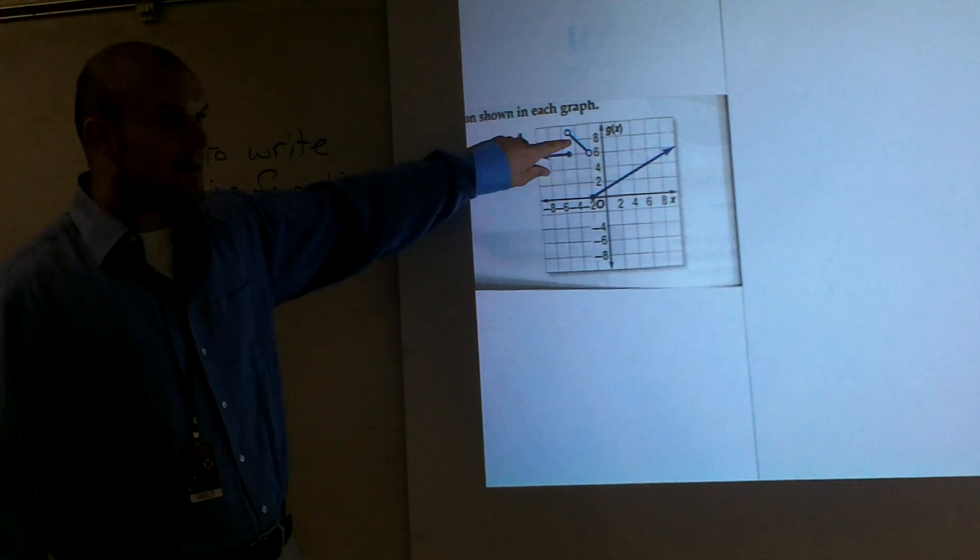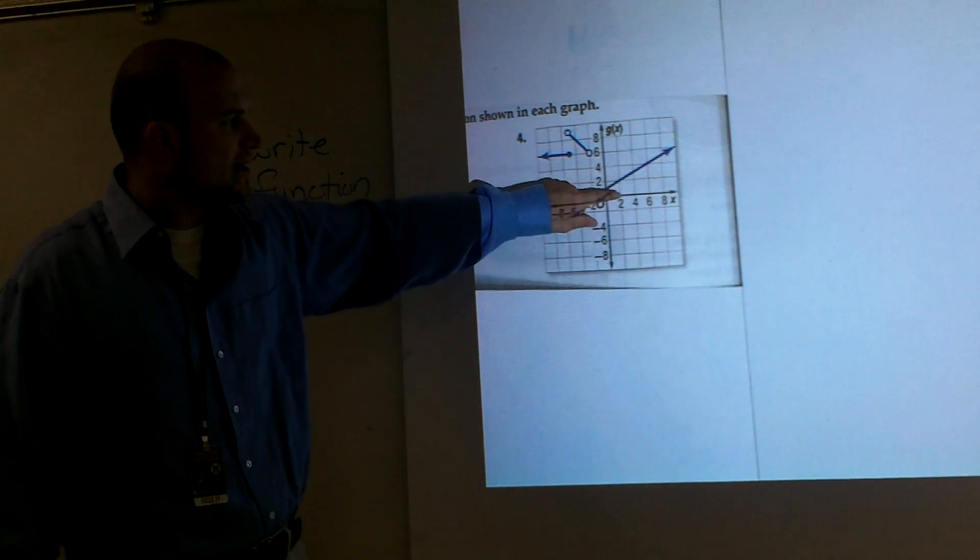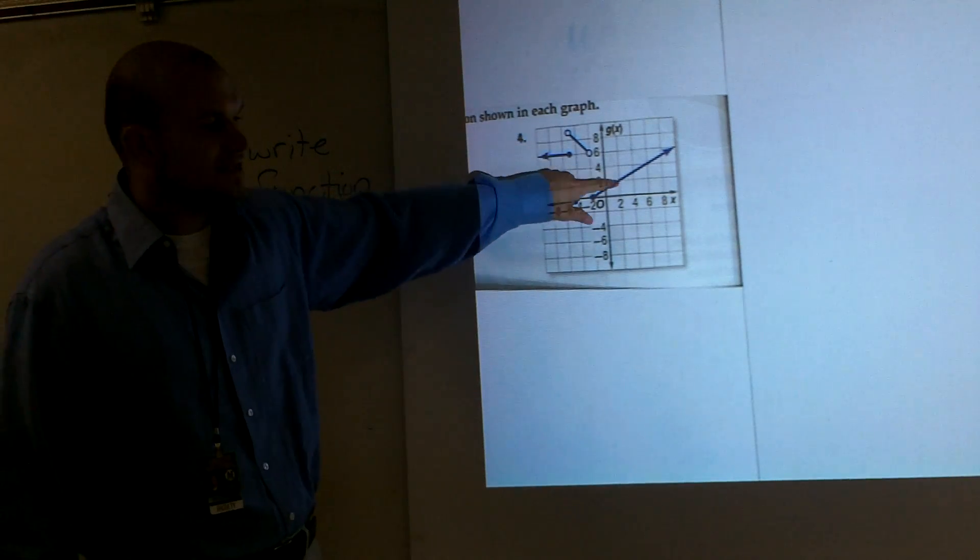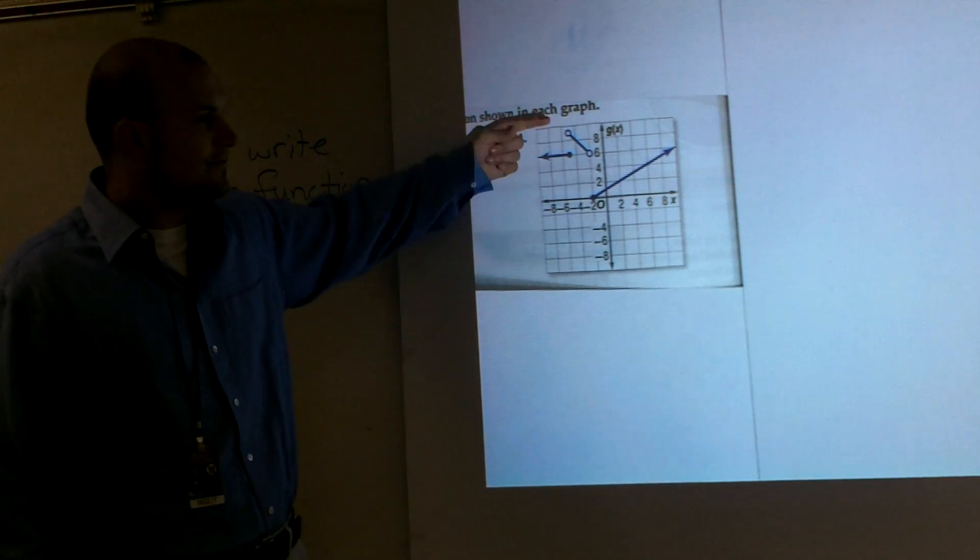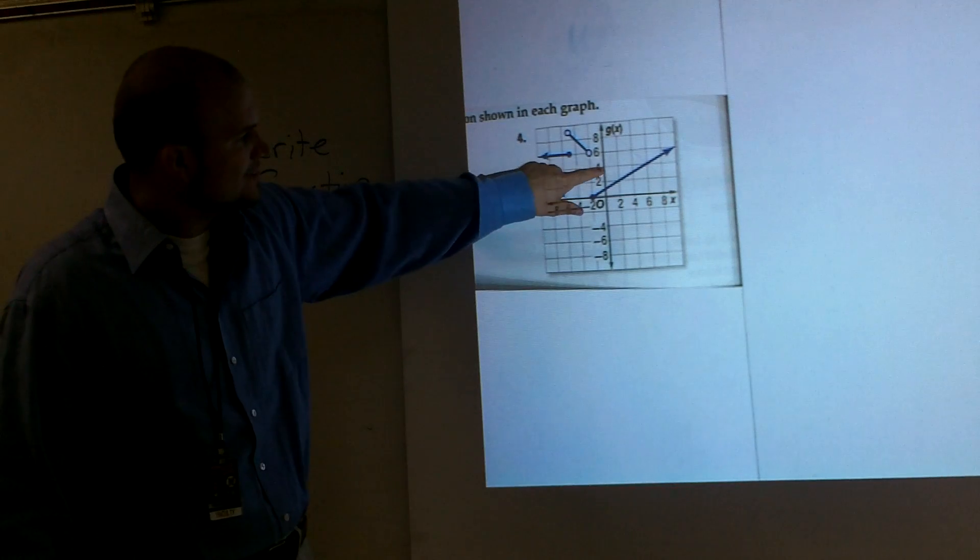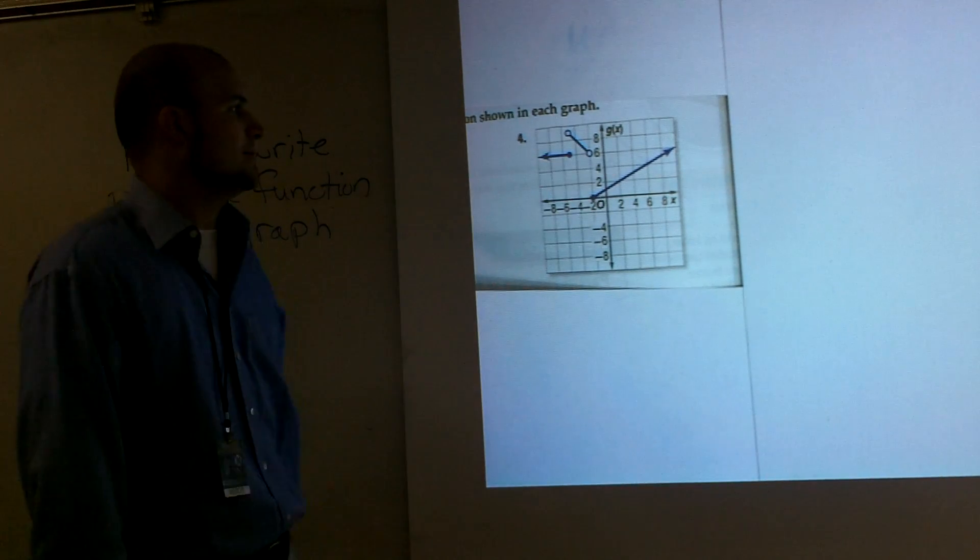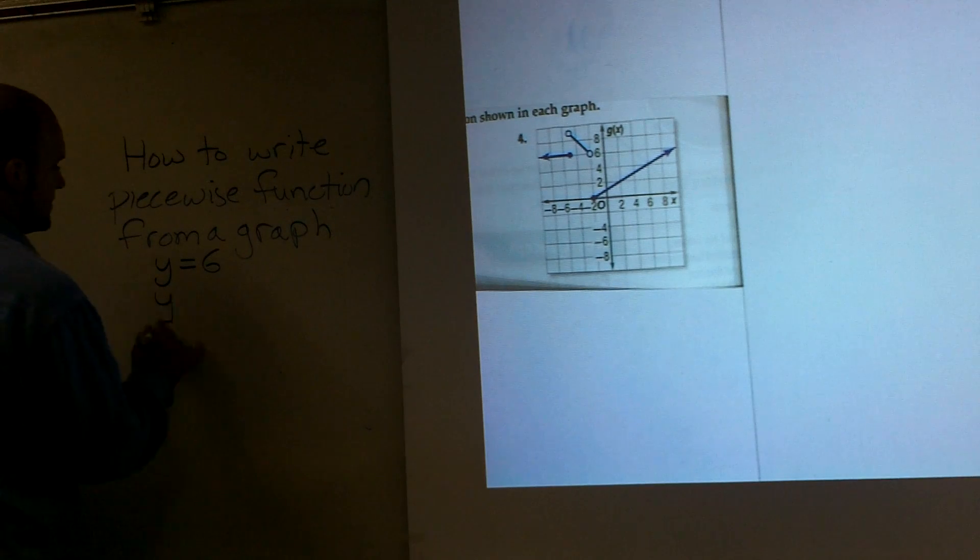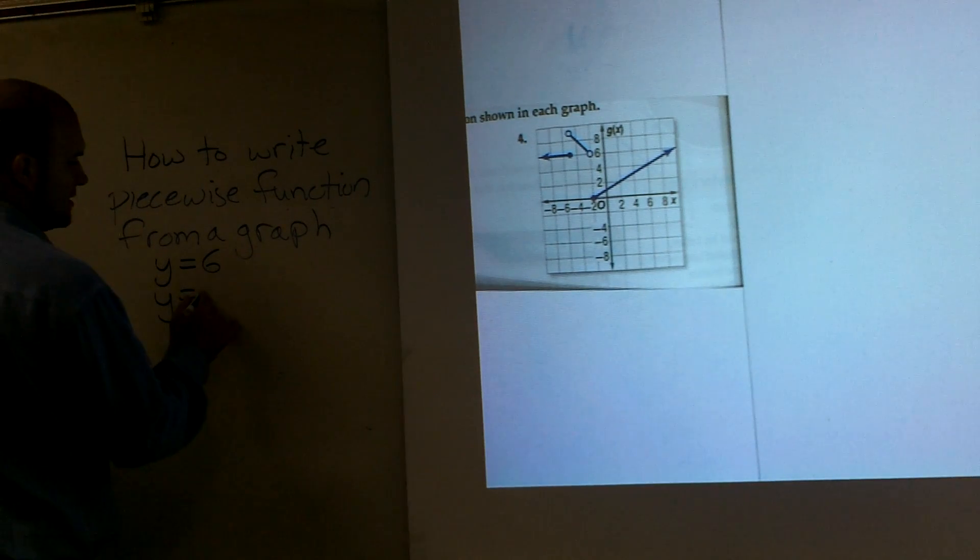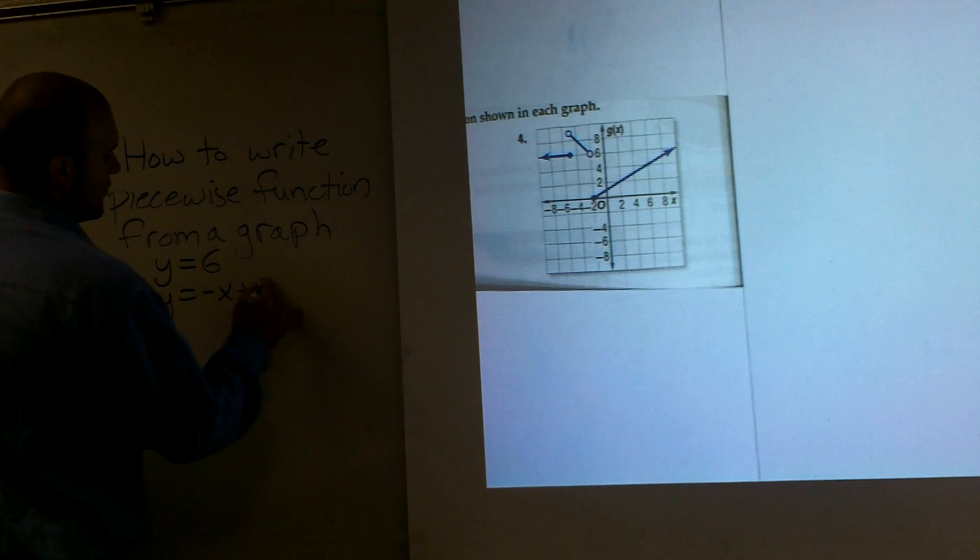Then I look at the next one. If I pretend this graph had no constraints, I could continue this infinitely to infinity and negative infinity for the domain and the range. And I notice that this would cross at 4. And it also has a slope of down 1 over 1. So therefore, I get y equals negative x plus 4.